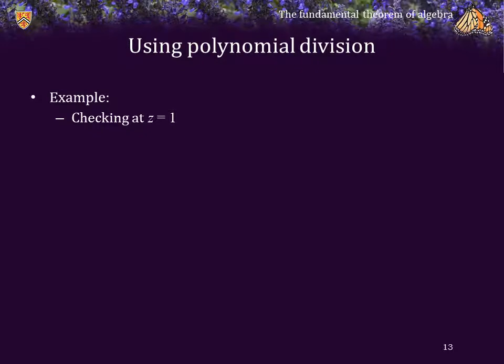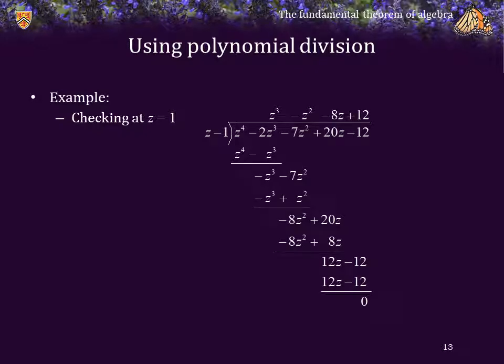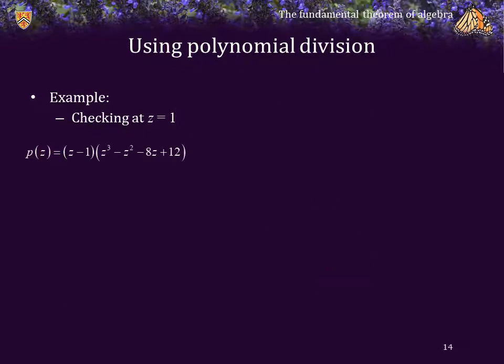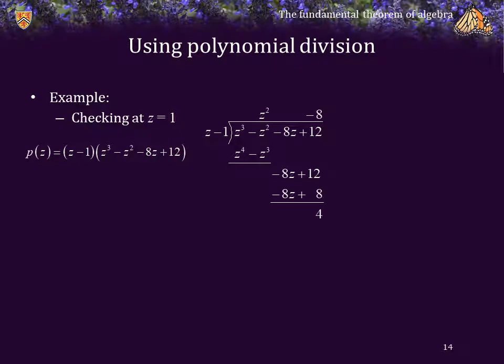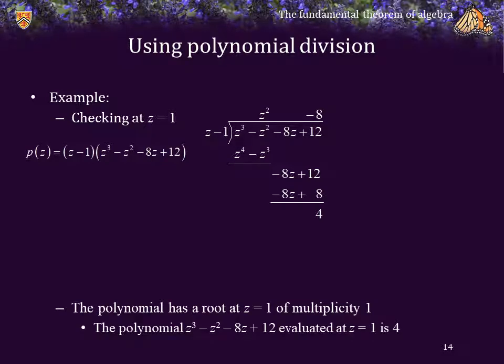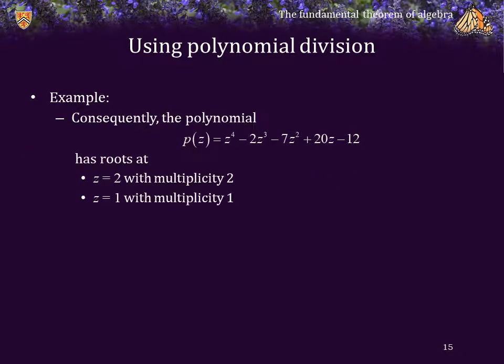Let's check at z equals 1. We do polynomial long division and get a remainder of 0, so the polynomial has a root at z equals 1 of at least multiplicity 1 — P equals z minus 1 times this cubic. Dividing the cubic by z minus 1 gives a remainder of 4, so the polynomial has a root of multiplicity 1 at z equals 1. Consequently, this quartic polynomial has a root at z equals 2 with multiplicity 2 and a root at z equals 1 with multiplicity 1. The polynomial does not have a root at z equals 3.